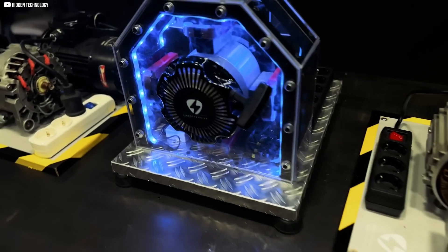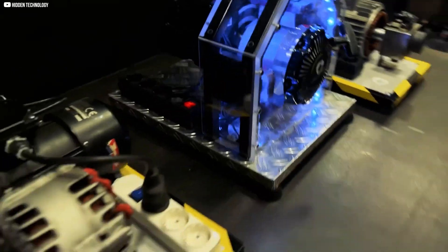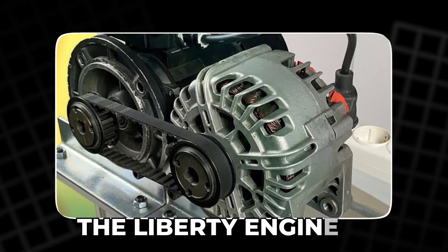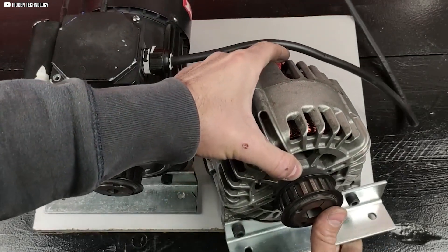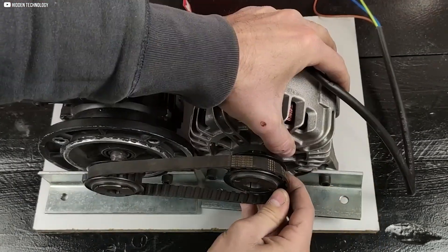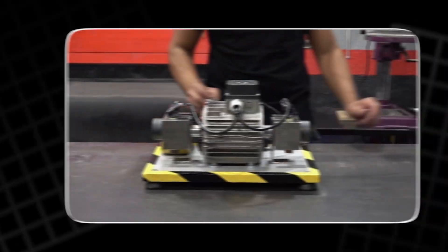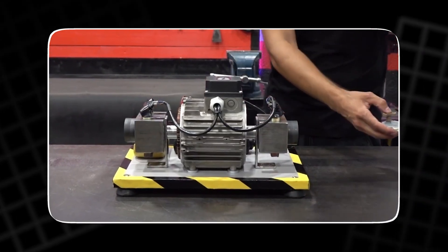For decades we've chased that dream. And now a new contender steps into the spotlight – the Liberty Engine 1.1. A bold project claiming to generate 10 kilowatts of triphasic power at 230 volts – seemingly infinite, without conventional input.